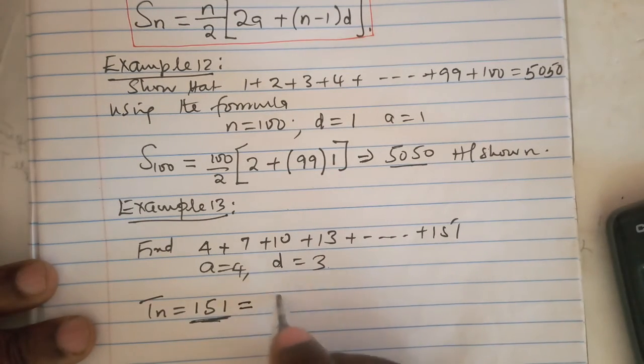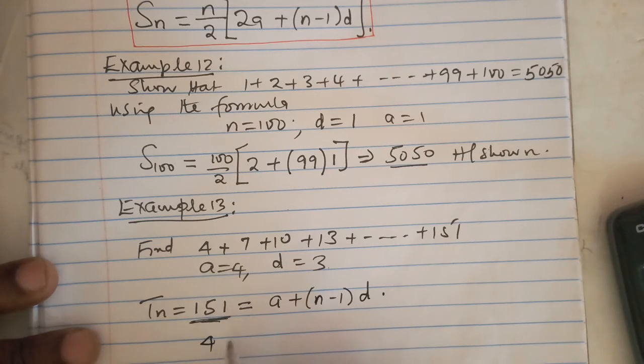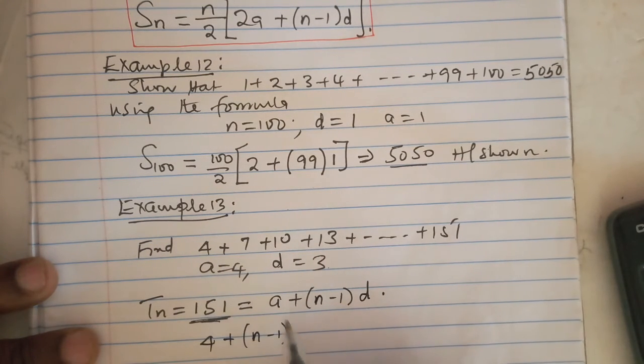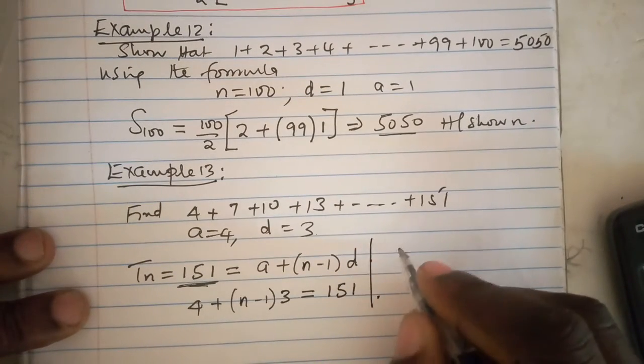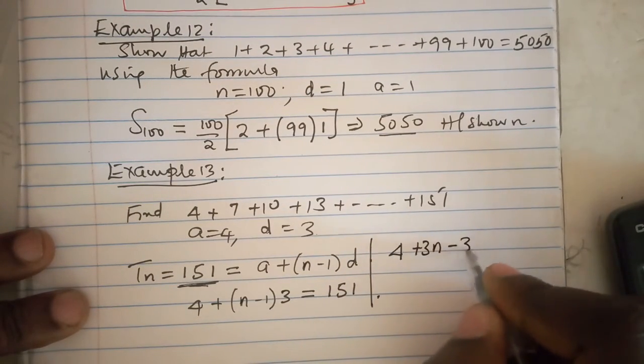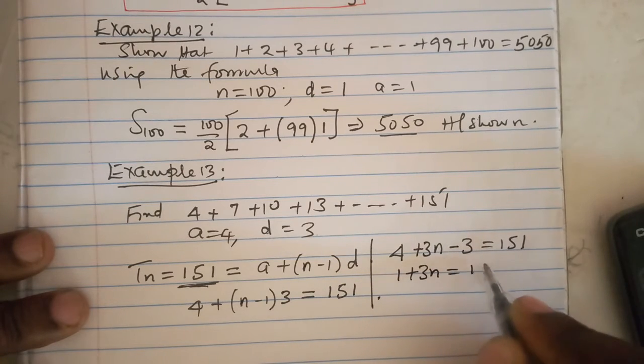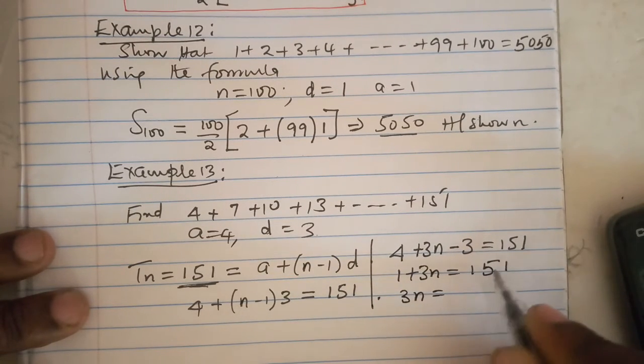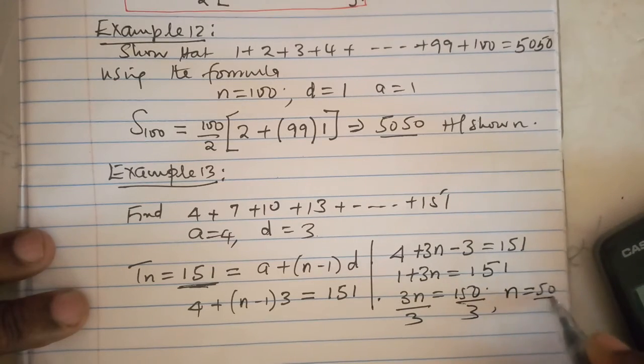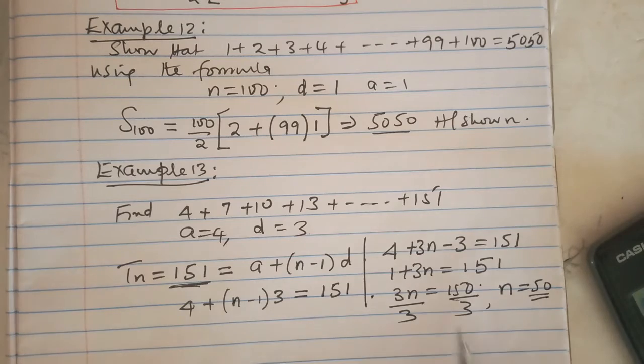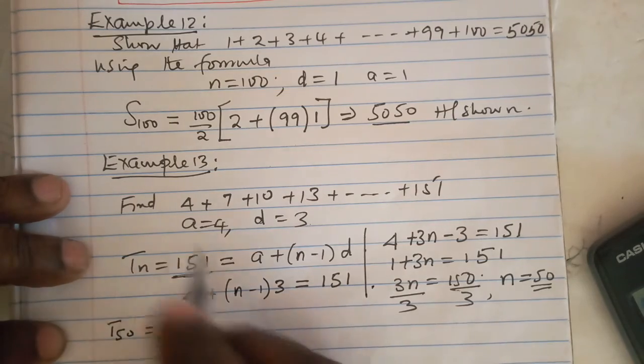We know the nth term is given by the formula a plus n minus 1 multiplied by d. Our a is 4, plus n minus 1 multiplied by d which is 3, should give us 151. Opening the brackets we get 4 plus 3n minus 3 equals 151. 4 minus 3 is 1, so 1 plus 3n equals 151, and 3n is 151 minus 1 which is 150 divided by 3. You realize that n is 50, so the 50th term is 151, so the whole sequence has 50 terms.